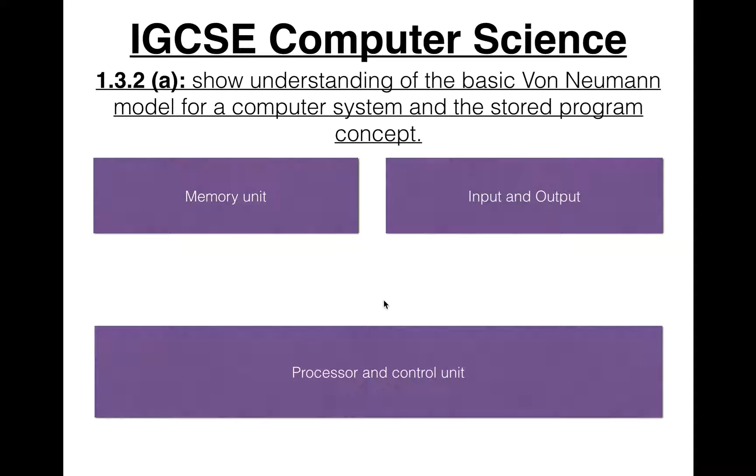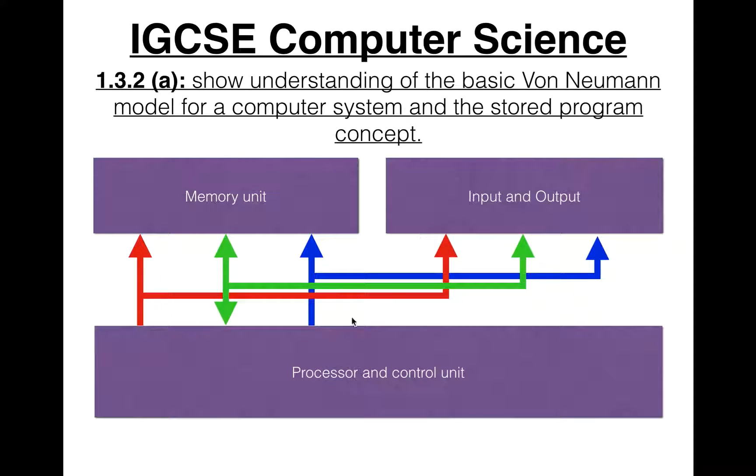These are all linked together with these wires here. These are called buses. The red is the address bus. The green is the data bus. And the blue is the control bus.